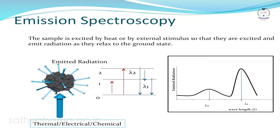In emission spectroscopy, the sample is stimulated by heat, electrical energy, or chemical reaction. Prior to stimulation, the sample is in its ground state. On absorbing the radiation or heat or any external stimulus, some species transition from the ground state to the excited level. Since the excited molecule is highly unstable, it relaxes back to the ground state, emitting radiation, which is measured as a function of wavelength.